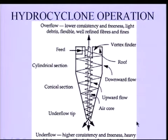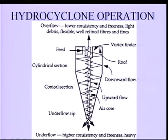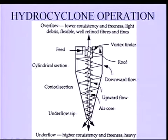This picture shows the basic operation of a hydrocyclone. A hydrocyclone is constructed with a cylindrical section followed by a conical section. The fiber-water-contaminant mixture enters tangentially at the top of the cylindrical section, and it swirls around generating centrifugal force, which throws high-density material towards the wall of the cyclone, transporting it downward.